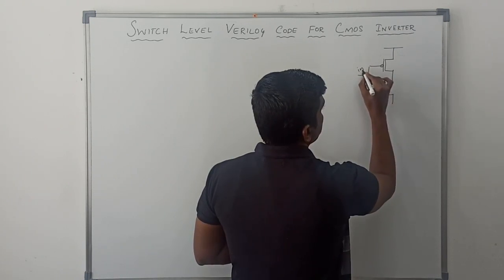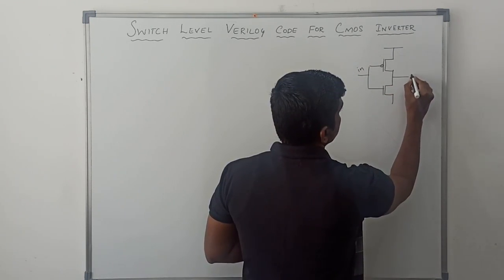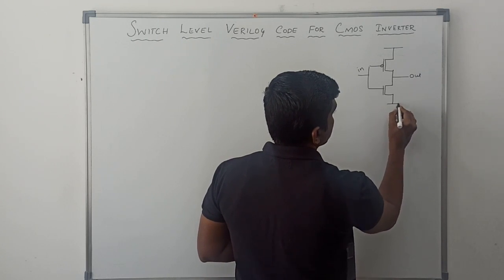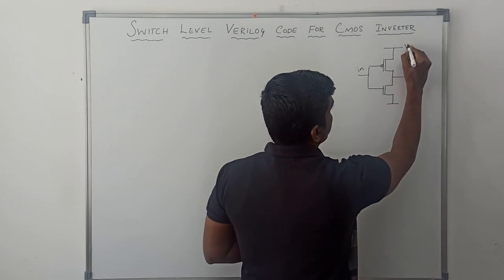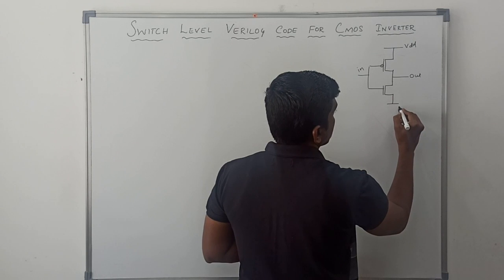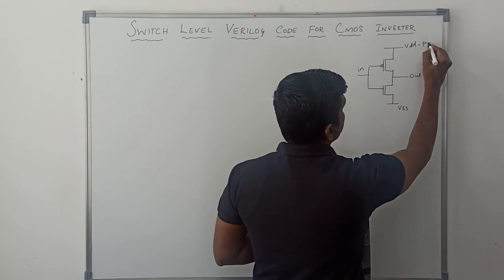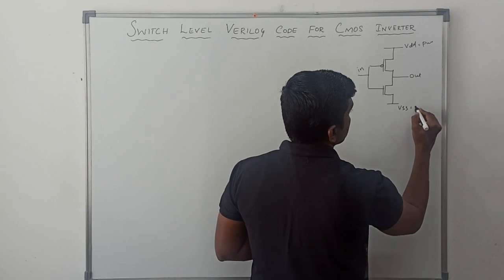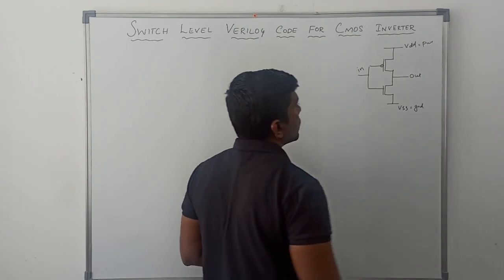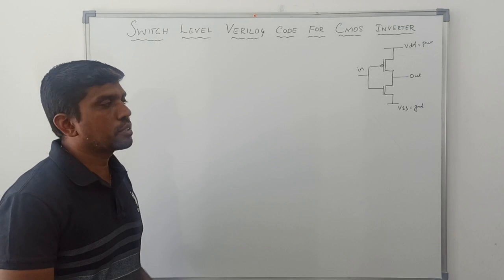The input is referred as in and this is our output. The PMOS transistor connects to VDD and the NMOS transistor connects to VSS. VDD refers to power and VSS refers to ground. So this is a simple CMOS inverter circuit.